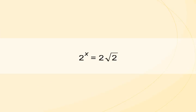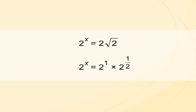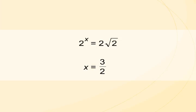To solve the equation 2 to the power of x equals 2 times the square root of 2, we express the right-hand side of the equation as a power of 2. The powers are equal with the same base when the exponents are equal. Therefore, x equals 3 over 2.